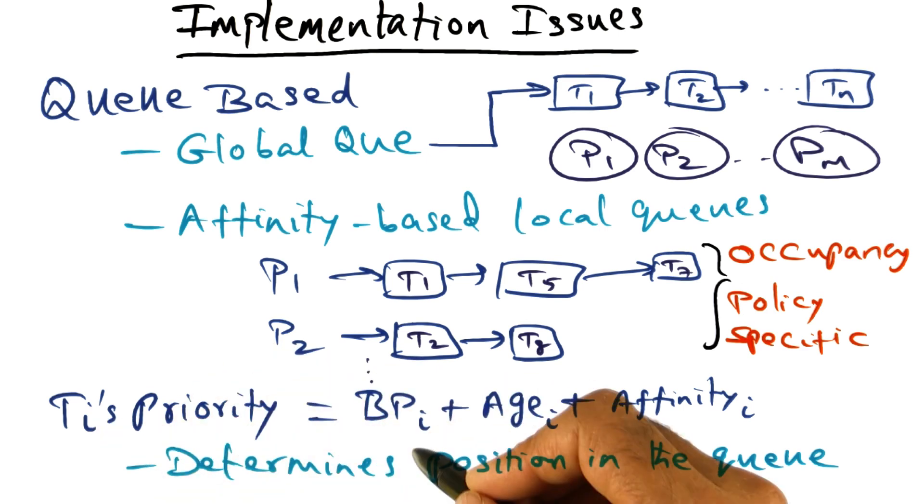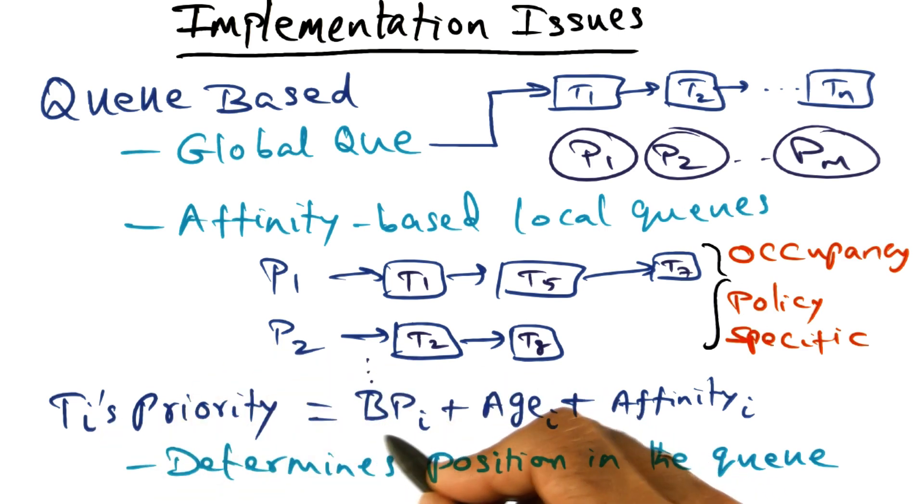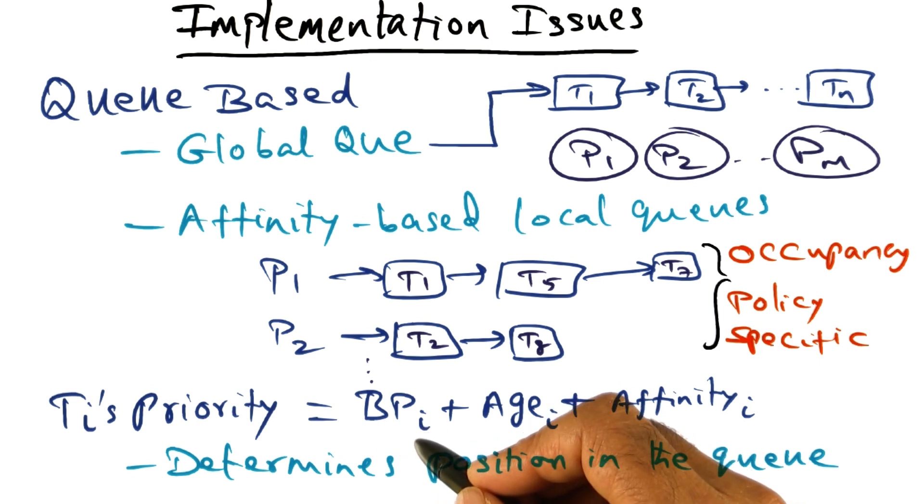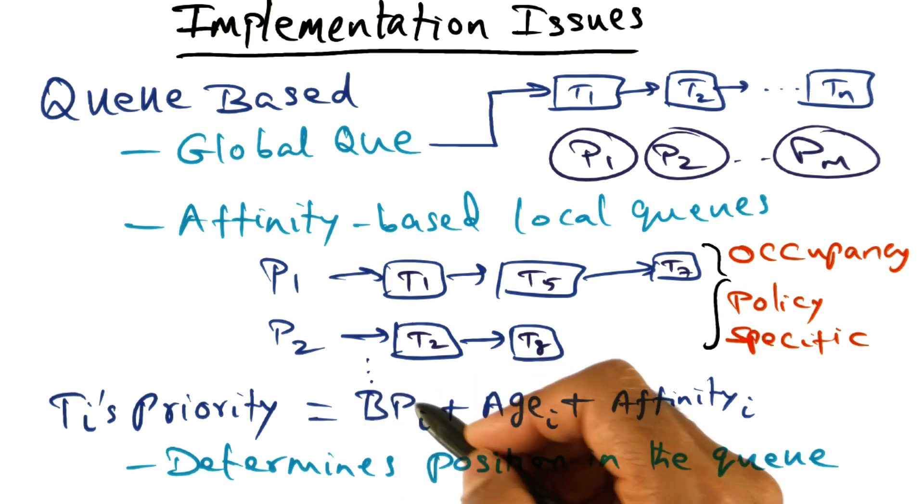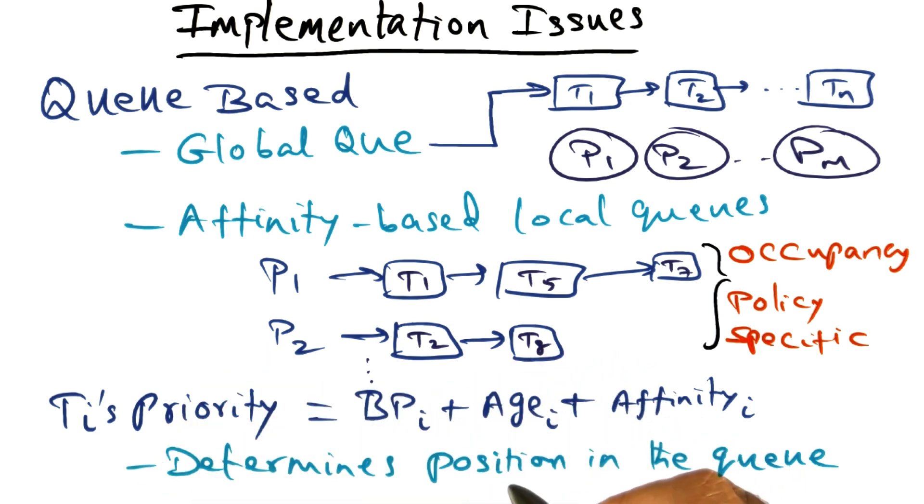So for instance, every thread may be born with a certain priority. So that is the base priority that a particular thread has when it is started up. And as I mentioned, it might depend on whether the user gave a huge amount of money in order to run his particular thread. So that is the base priority that you associate with a thread.